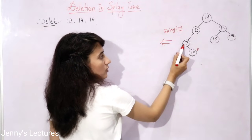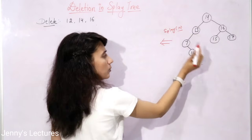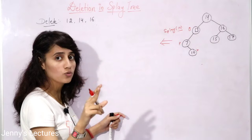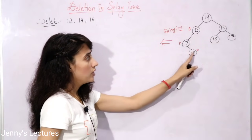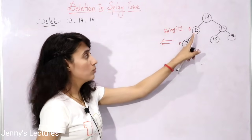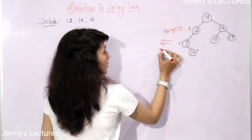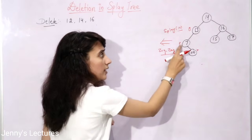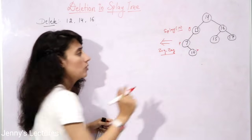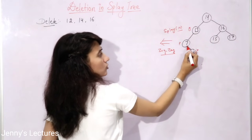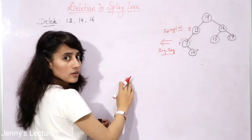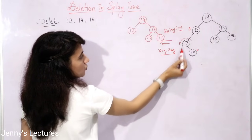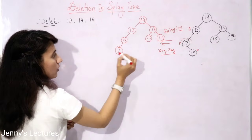To splay, find the parent and grandparent of the node. Here, 10's parent is 7 and grandparent is 13. Since both parent and grandparent exist, we check the sub-case. Node 10 is the right child of its parent, but the parent is the left child of its grandparent — they are in opposite directions, so this is a zigzag situation. In zigzag rotation, first perform left rotation on the parent, then right rotation on the grandparent. After the left rotation, 10 goes upward and 7 goes downward.